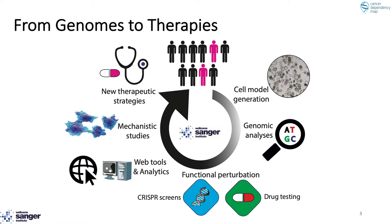At the Sanger Institute, we are using large-scale systematic approaches to understand how somatic variation in cancer genomes creates therapeutic vulnerabilities and impacts on therapy response. We have developed a preclinical ecosystem combining cell model generation, genome analysis, functional perturbation, analytics, and detailed mechanistic studies to identify new therapeutic strategies.